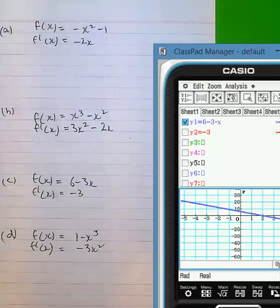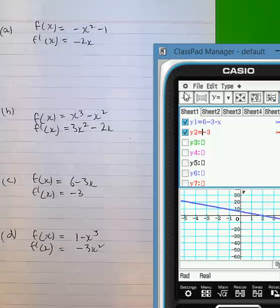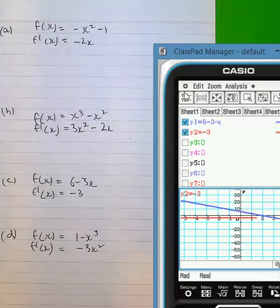In part C, when we're dealing with a straight line function with negative gradient, and when we look at the gradient function in red, you can see it's a constant negative 3.